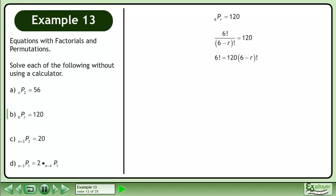Cross multiply. Divide both sides by 120. This gives us 6 equals (6-r) factorial.